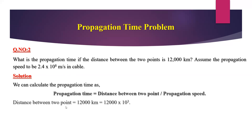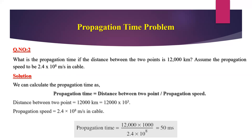We apply those two values in the formula. The distance between two points equals 12,000 kilometers — multiplying by 10³ gives 12,000 × 10³ meters. The propagation speed is 2.4 × 10⁸ meters per second. So the propagation time equals 12,000 × 1000 divided by 2.4 × 10⁸, which converts to 50 milliseconds. This is the answer.